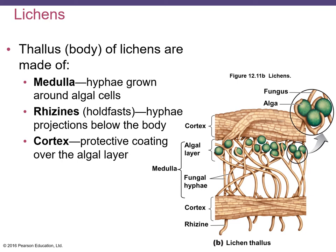The lichen thallus — the body — forms when fungal hyphae grow around algal cells to become what we call the medulla, as seen in figure 12-11b. The fungal hyphae project below the lichen body to form rhizines or holdfasts. The fungal hyphae also form a cortex, or protective covering, over the algal layer and sometimes under it as well. After incorporation into a lichen thallus, the algae continues to grow and the growing hyphae can incorporate new algal cells.